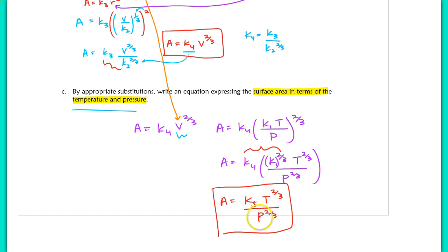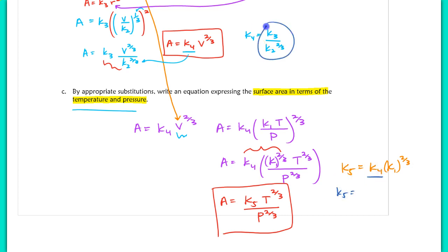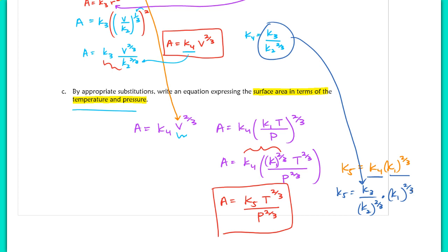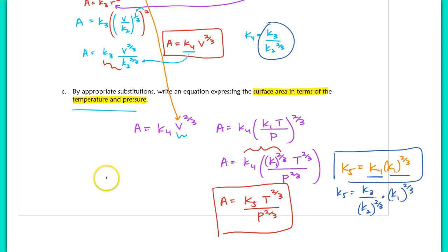Just to note: K₅ equals K₄ times K₁^(2/3), and since K₄ equals K₃ / K₂^(2/3), we can trace back to K₅ equals K₃ times K₁^(2/3) / K₂^(2/3). That completes the substitution process for both example problems. Make sure you're prepared to ask questions if anything is still confusing — see you tomorrow.